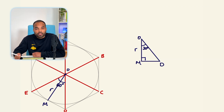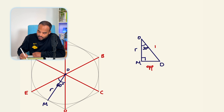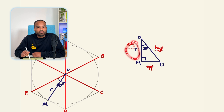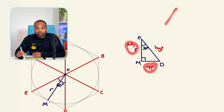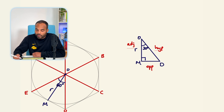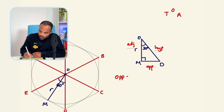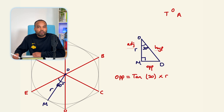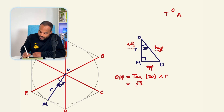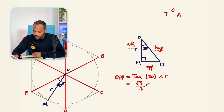MD is opposite the 30° angle, and OM = r is the adjacent side. Using right-angle trigonometry: opposite over adjacent is tan, so we use the tan ratio. The opposite side MD = tan(30°) × r. Tan(30°) = √3/3, so MD = (√3/3) × r.